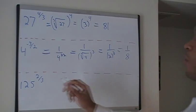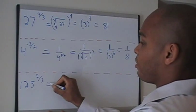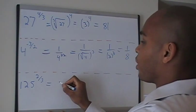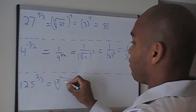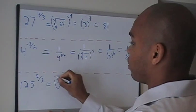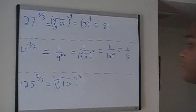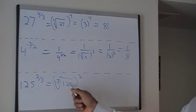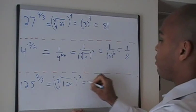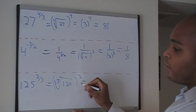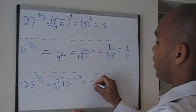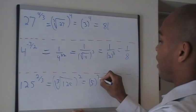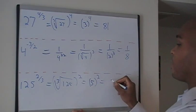Last but not least we have 125 raised to the 2 thirds. So we're going to take the cube root of 125 and that result I'm going to square. So what number multiplied by itself 3 times will give me 125? Well 5 times 5 is 25. 25 times 5 is 125. So I'm left with 5 squared. 5 squared becomes 25.